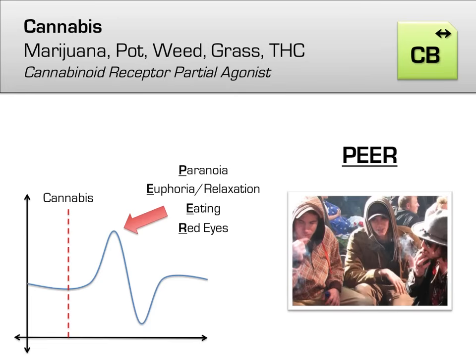You can remember this using the mnemonic PEER, as cannabis use often begins in the company of one's peers. P for paranoia, E for euphoria and relaxation, the other E for eating, and R for red eyes.